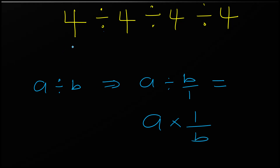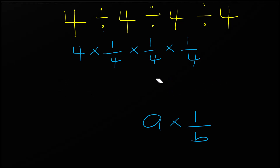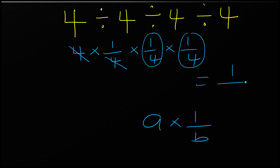So from here you can see 4 times 1 over 4 times 1 over 4. The 4 will cancel, leaving 1 over 4 times 1 over 4, which equals 1/16.